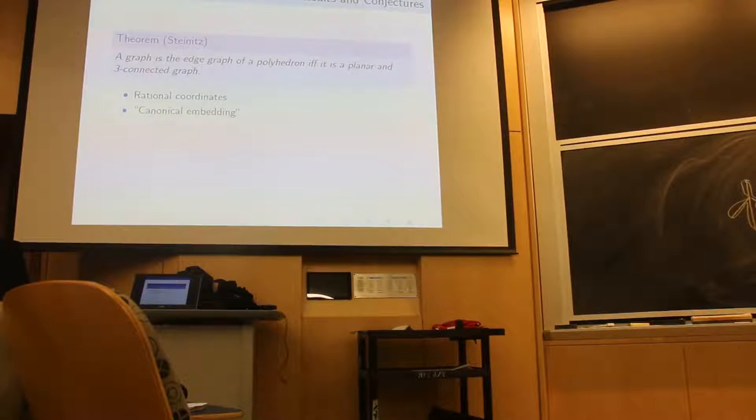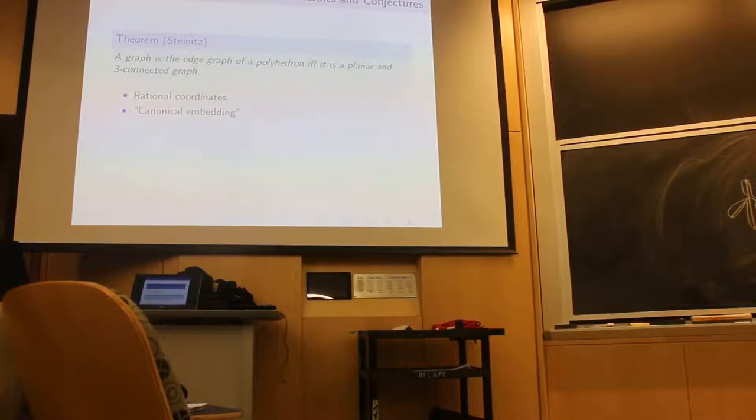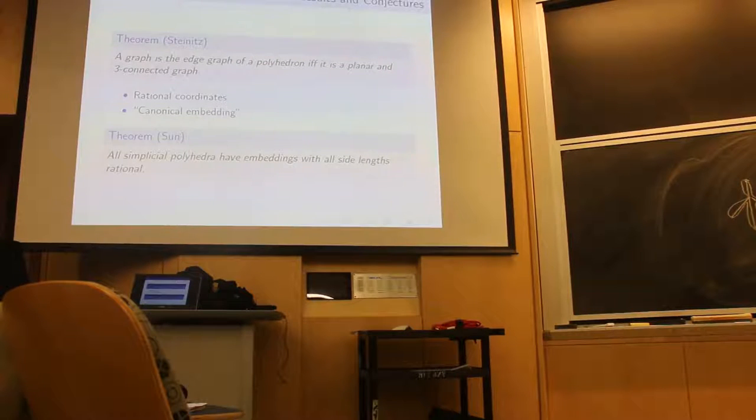The most significant step towards a positive answer to our question has been a theorem of Sun, which states that all simplicial polyhedra have rational embeddings, where a polyhedron is simplicial if all of its faces are triangles. This is a very helpful step, but it is possible only because simplicial polyhedra have the property that the vertices can be slightly perturbed while preserving the structure, because there are no planarity conditions to break. All the faces will remain planar if you move one of the vertices a little bit.